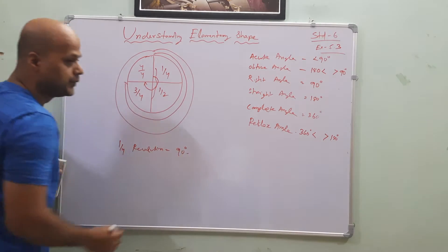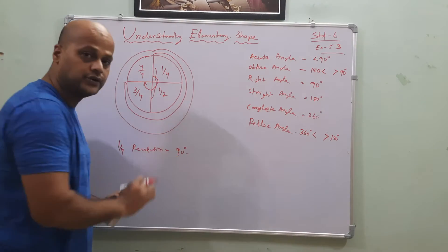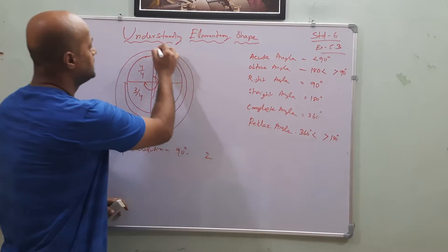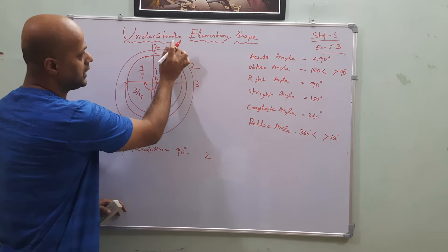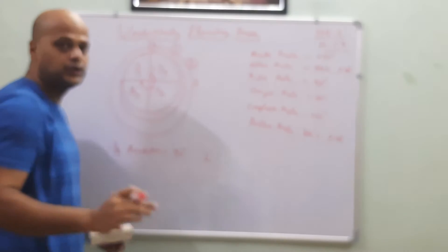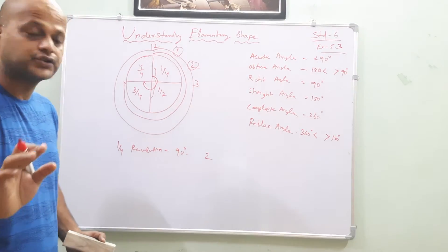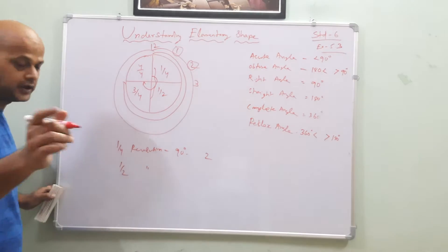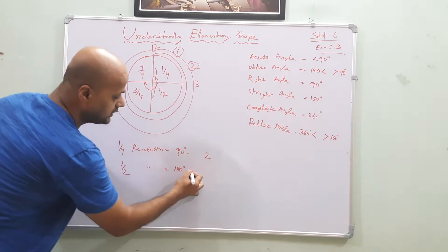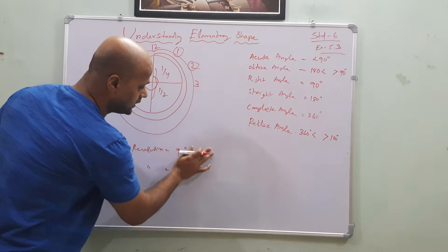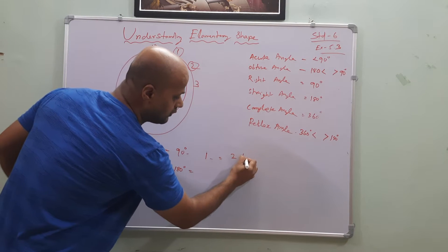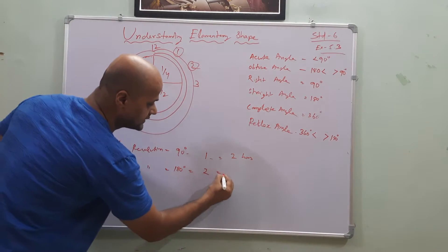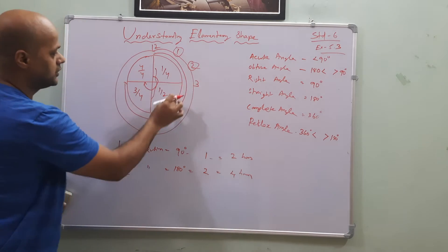The value of one-fourth revolution is 90 degrees. In a right angle or a quarter revolution, if you mark a clock with 12 and 3, the hour gap is 2 hours between one right angle. For a half revolution, the value is 180 degrees, and two right angles are formed — with a four-hour gap between them.